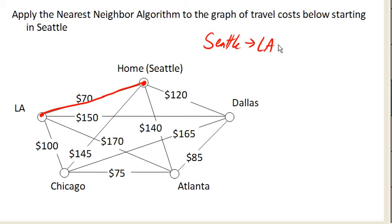Then from LA, the cheapest option — we've got 100, 170, 150 — and 100 is the cheapest. So we go to Chicago.